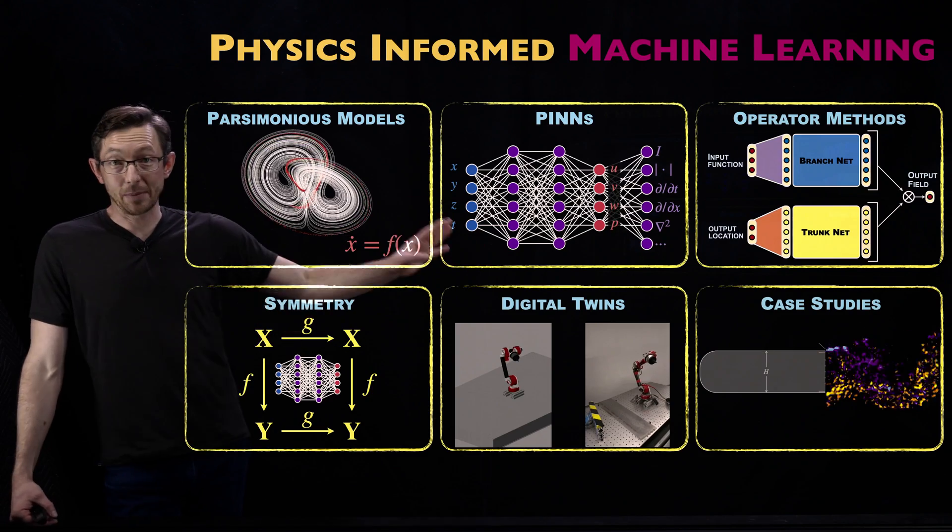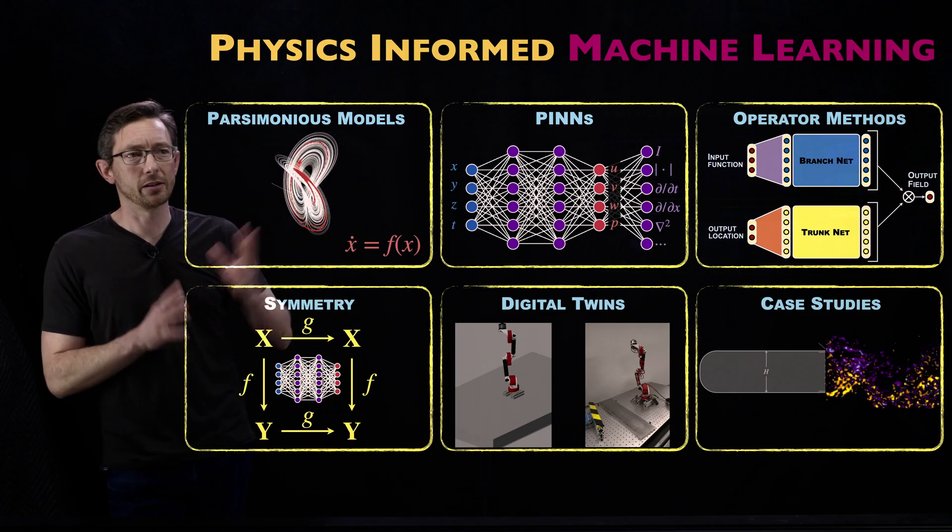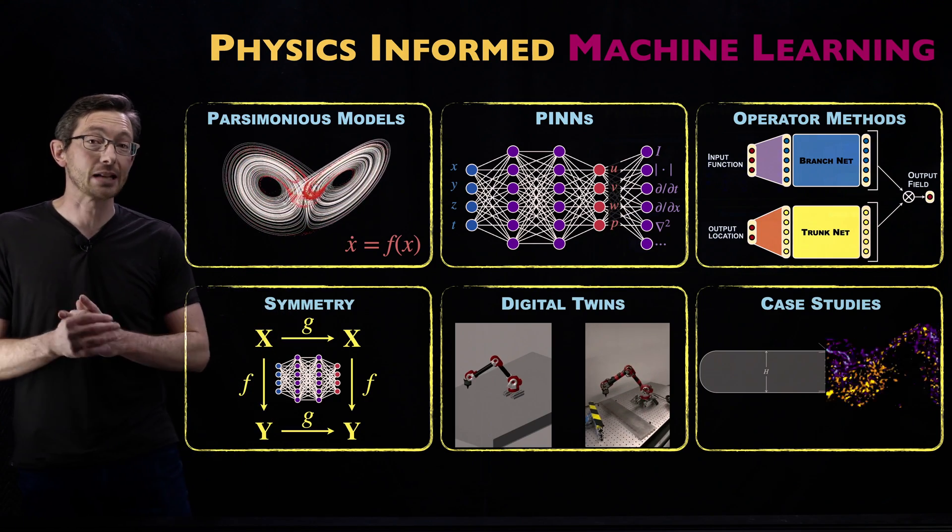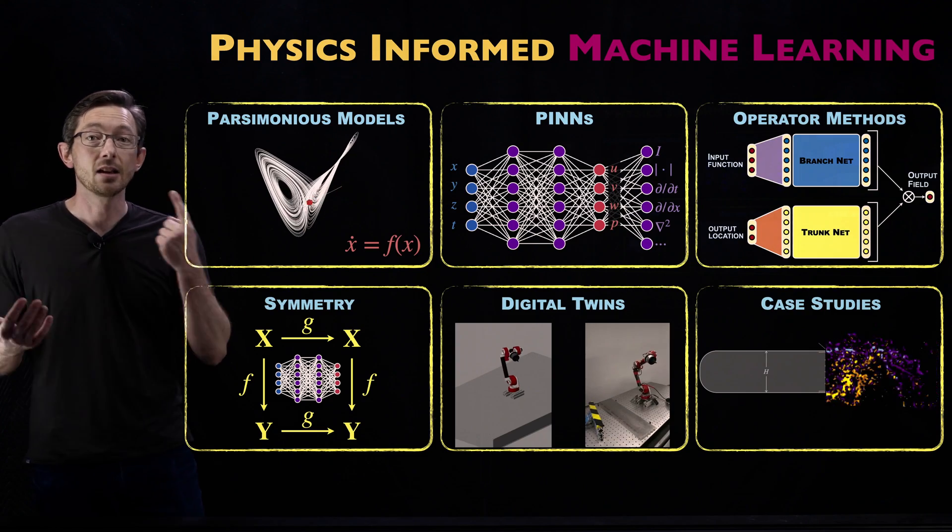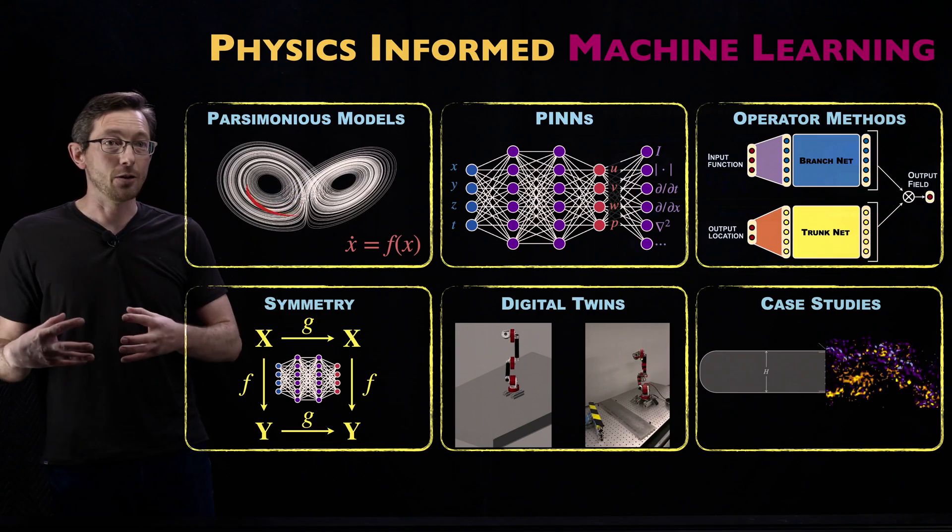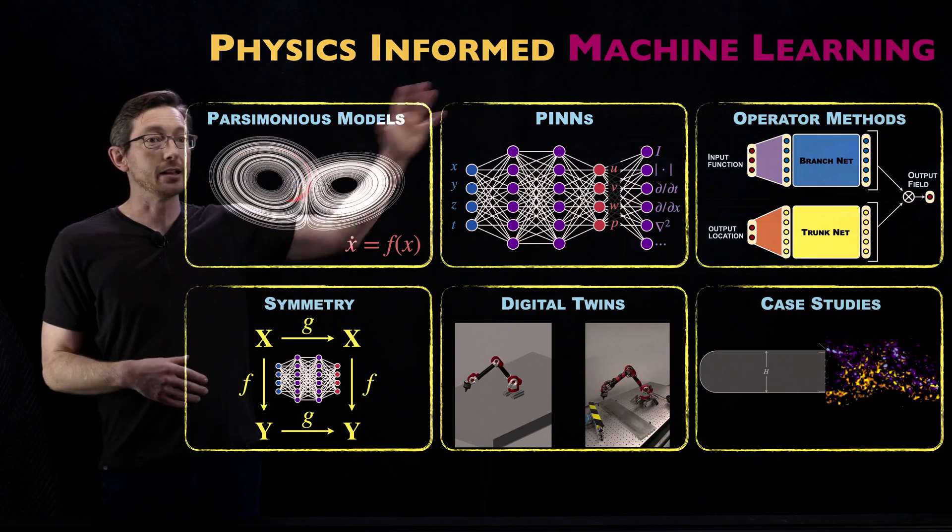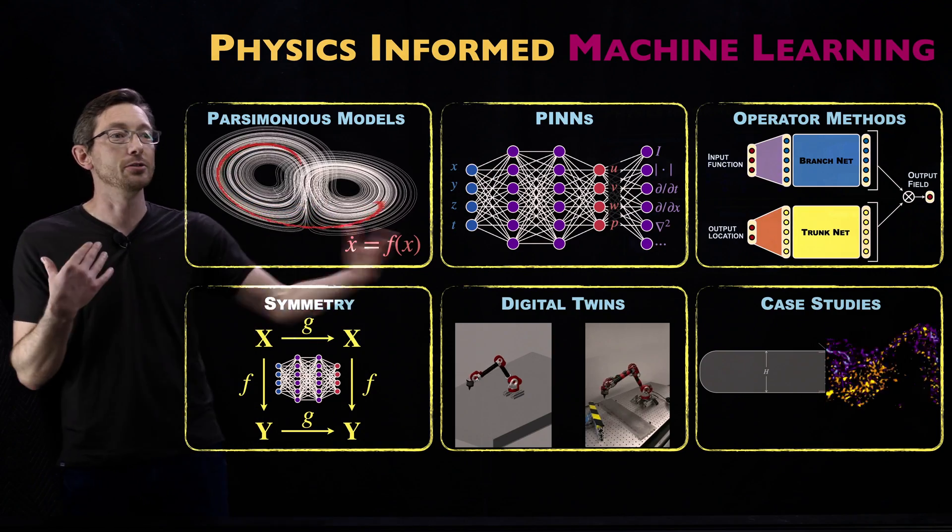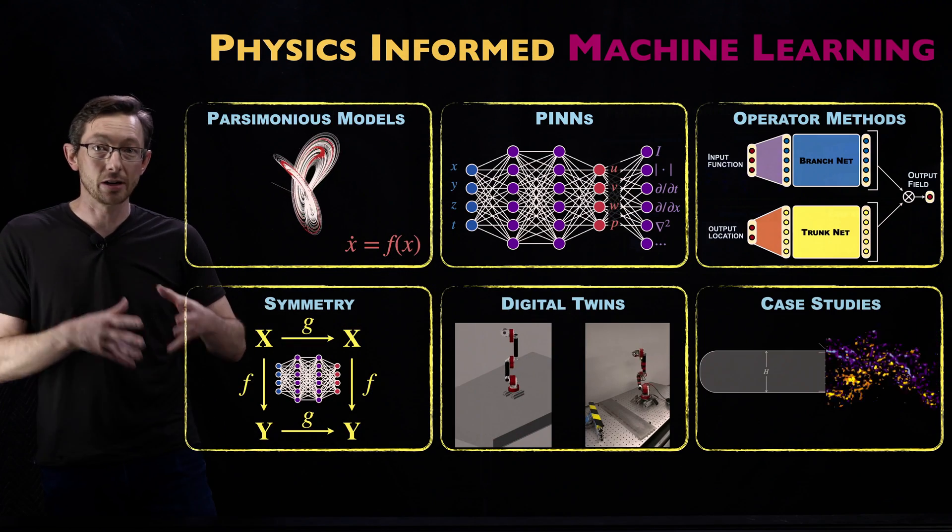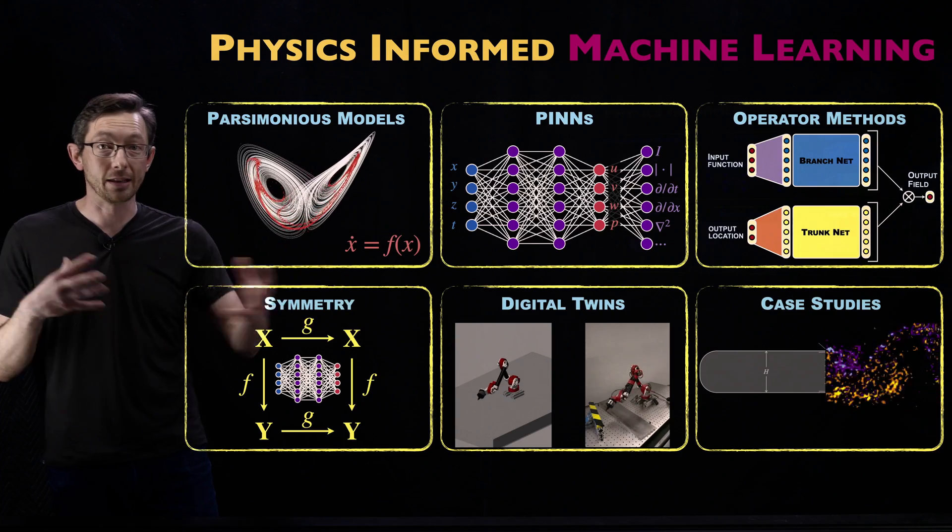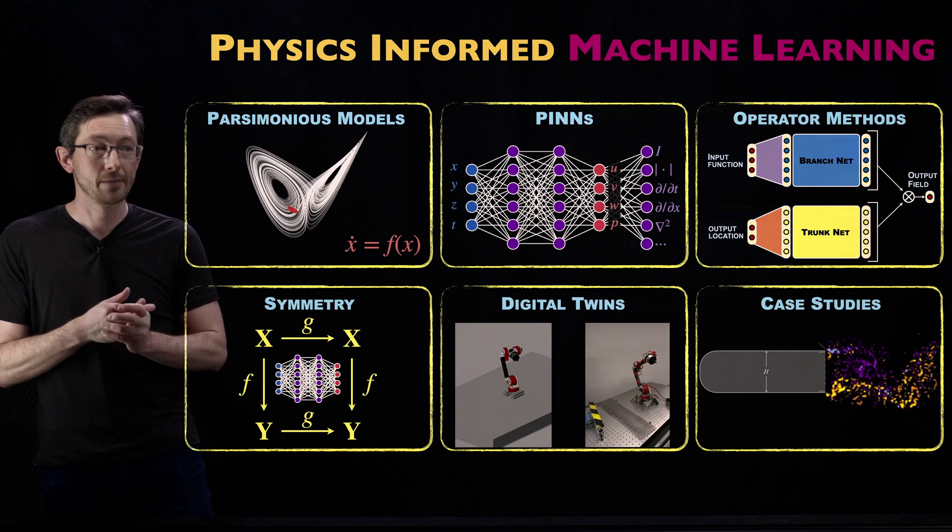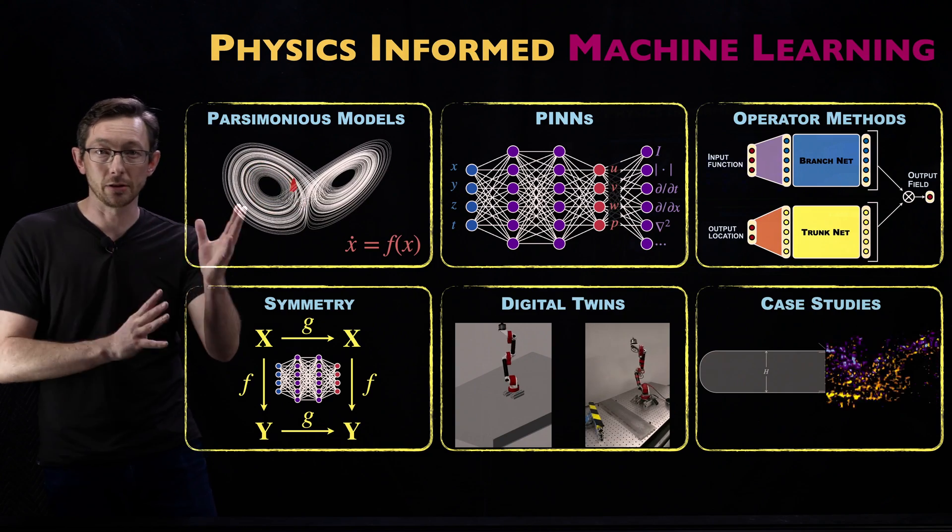The last piece will be case studies and benchmarks. We're going to spend a decent amount of time digging into actual physical examples like fluid mechanics, materials discovery, robotics. How do you do parsimonious modeling or PINNs? What are the symmetries? How do digital twins impact those fields? This won't just be me. I'm hoping to get lots of my expert colleagues who have great case studies to contribute.